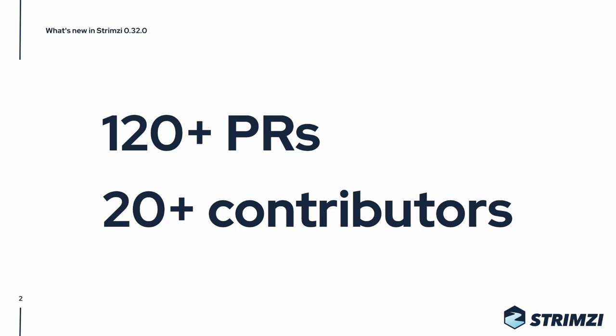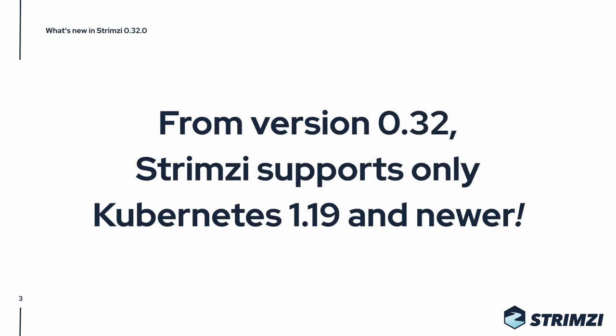Before we start with the new features, let's talk about two important announcements. First of all, from this version, Strimzi supports only Kubernetes 1.19 and newer. That means that if you are using Kubernetes 1.16, 1.17, or 1.18, they are not supported anymore and you should upgrade your Kubernetes version.